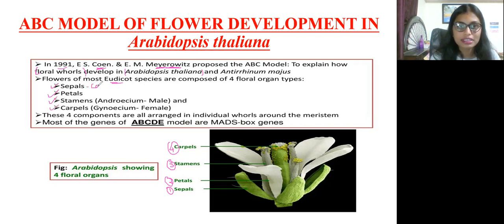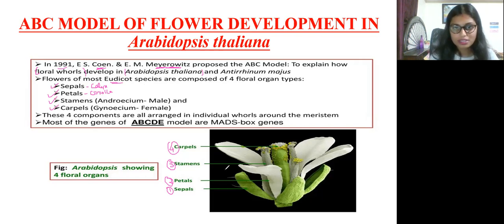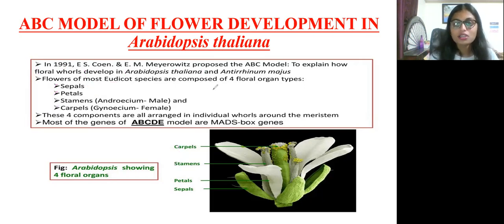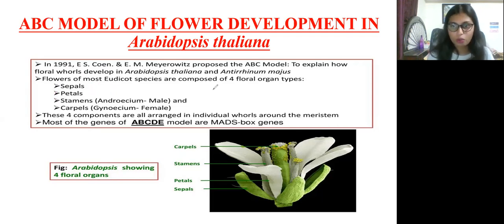Sepals are also called calyx, and petals are called corolla. You can see the Arabidopsis flower showing all four floral organs. The main point about the ABC model is that they explain how these four organ formations — sepal, petal, stamen, and carpel — take place, and many genes are involved in this process.